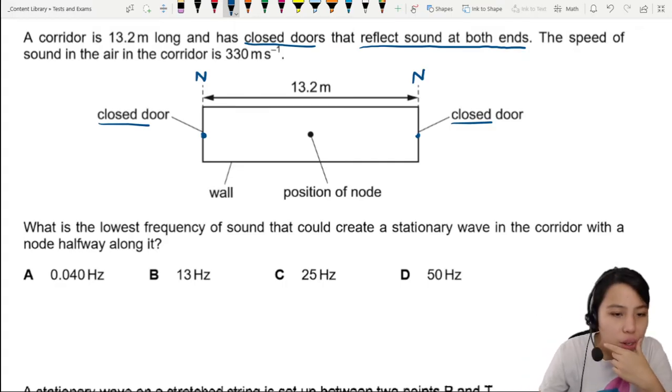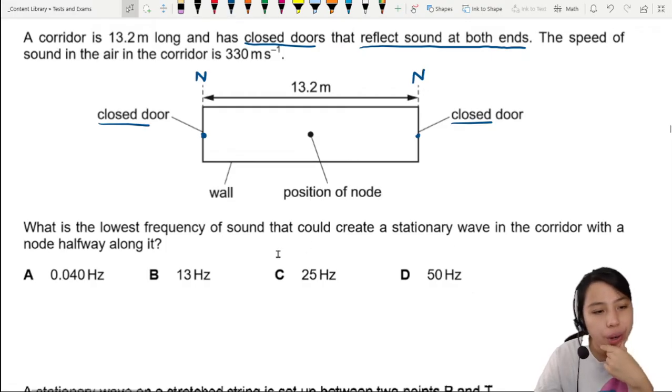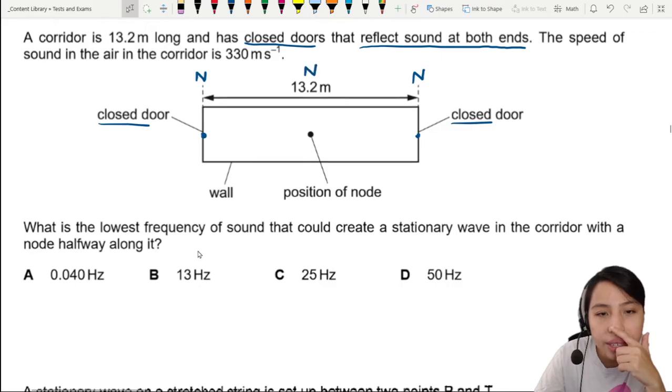What is the lowest frequency of sound that could create a stationary wave in the corridor with a node halfway along it? So that means there's another node. Here's another node.